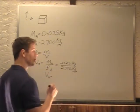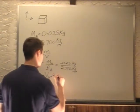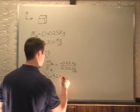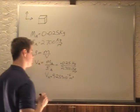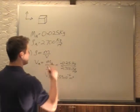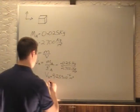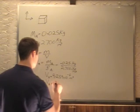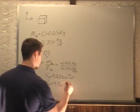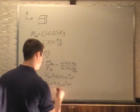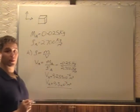Our volume of aluminum turns out to be 9.259 times 10 to the minus 6 cubic meters. Two significant digits, because that's what we have. The final volume is 9.3 times 10 to the minus 6 cubic meters. That's the volume of our aluminum.